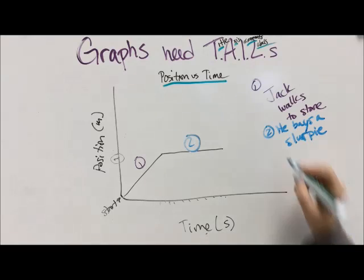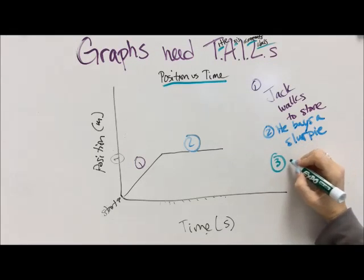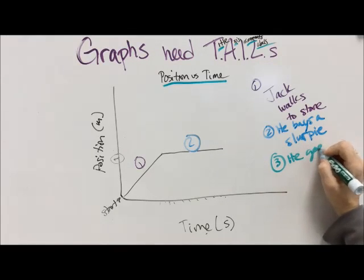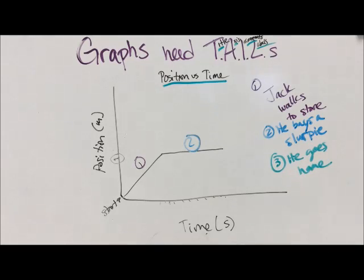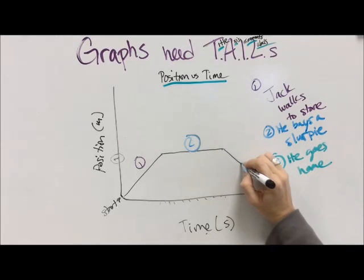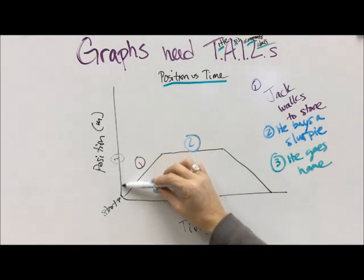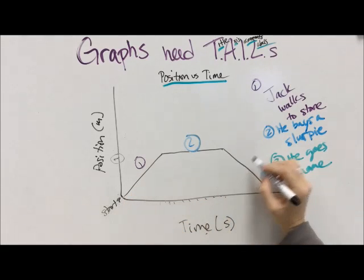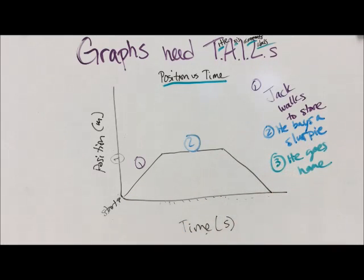And then for segment number three, he is going to go back home. It's a very simple trip that Jack took today. He just needed some slurpee. Now we're going to draw a line back to our starting point because his position is returning back to where he started, but time keeps marching on, so it has to move over to the right, always over to the right.